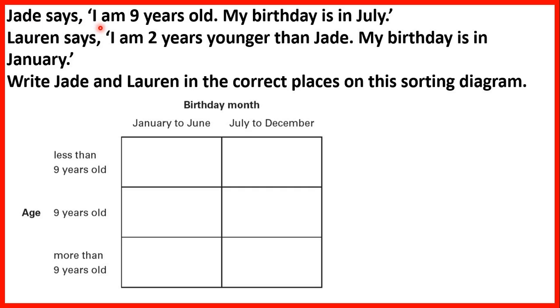Jade says, I am 9 years old. My birthday is in July. Lauren says, I am 2 years younger than Jade. My birthday is in January.